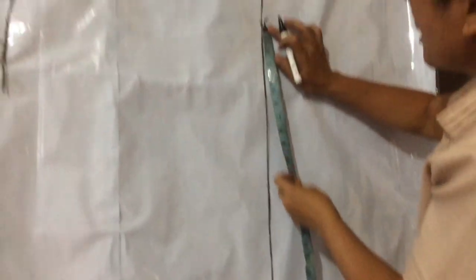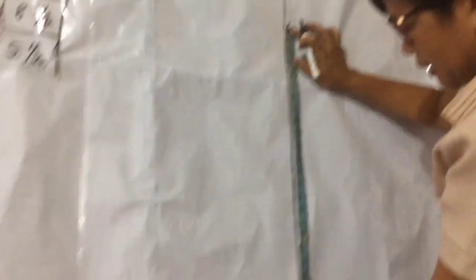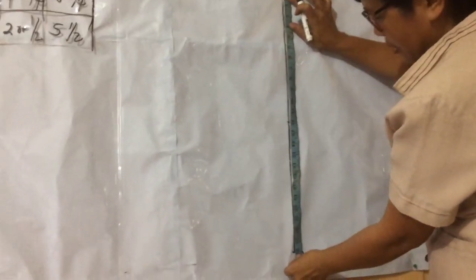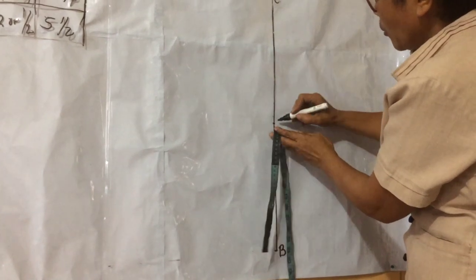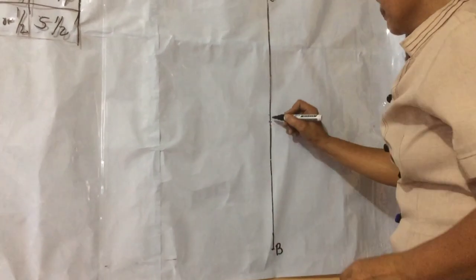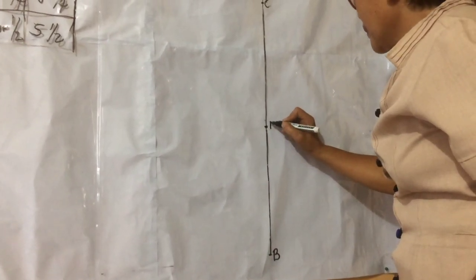D is one half of C and B. 24, C and B. One half of 24, 12. Mark D.